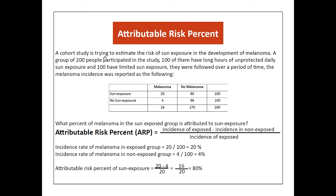Using the same cohort study example with the two-by-two table, the question is: what percent of melanoma in the sun-exposed group is attributable to sun exposure? We calculate the attributable risk — the difference between incidence rate in exposed and non-exposed — which is 20% minus 4%. Dividing that by the incidence rate in the exposed group: 16 divided by 20 equals 80%.